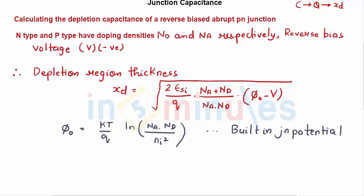Now how are we going to do this? Let's understand the basics. To calculate the capacitance, I'm going to find out the total charge. I need to know the total depletion region thickness where the charge is going to be present, so I am going to find XD. So here is what I have written: calculating the depletion capacitance of a reverse biased abrupt PN junction.